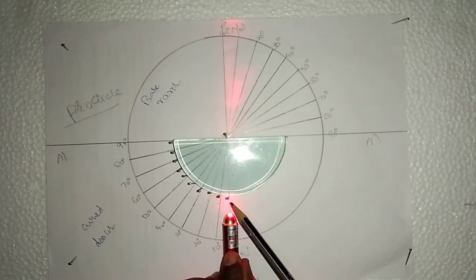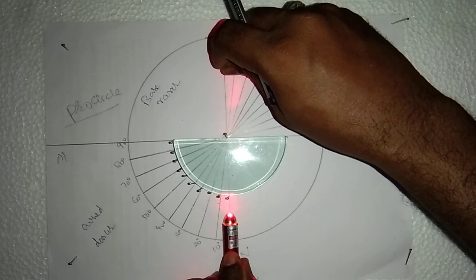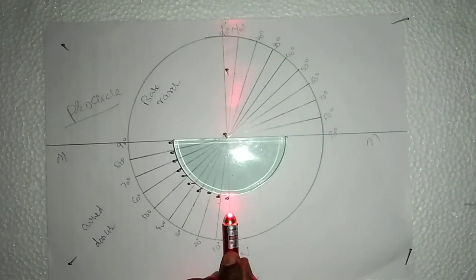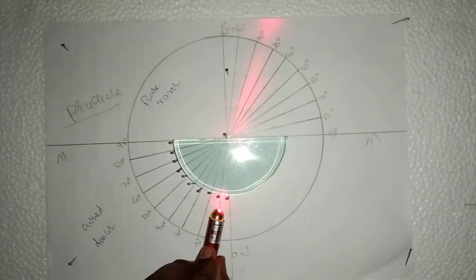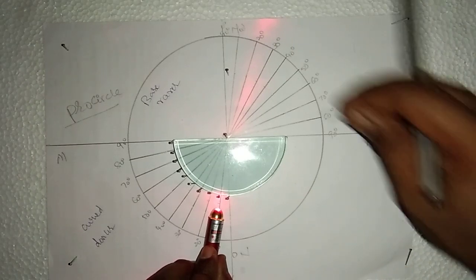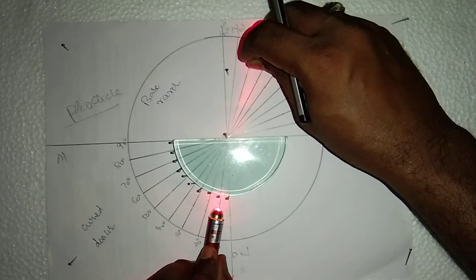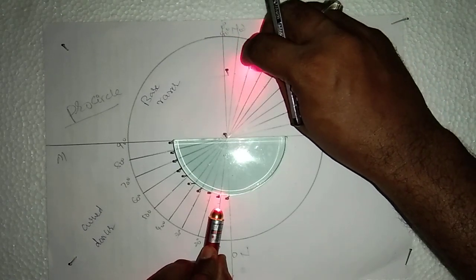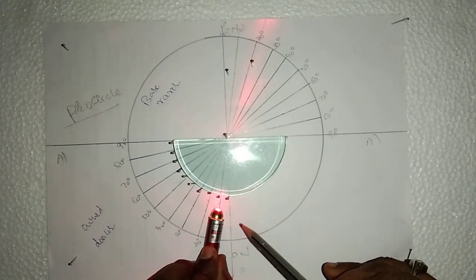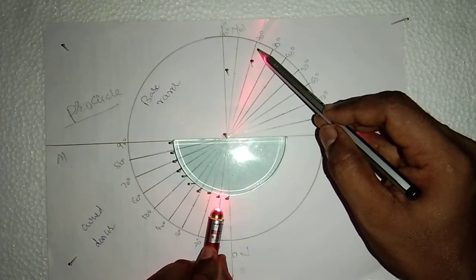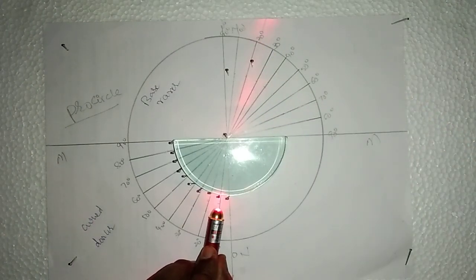The laser is falling on the pin. We are going to identify at what angle the laser light comes outside. Approximately the angle is 0. Now, pass the laser light at an angle of 10 degrees from curved surface to base, that is from denser to rarer. The light ray comes outside at an angle of approximately 22 degrees.